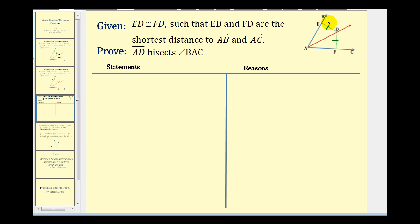We are given that segment ED is congruent to segment FD, and that the lengths of ED and FD are the shortest distances to ray AB and ray AC, respectively. We want to prove that ray AD bisects angle BAC.